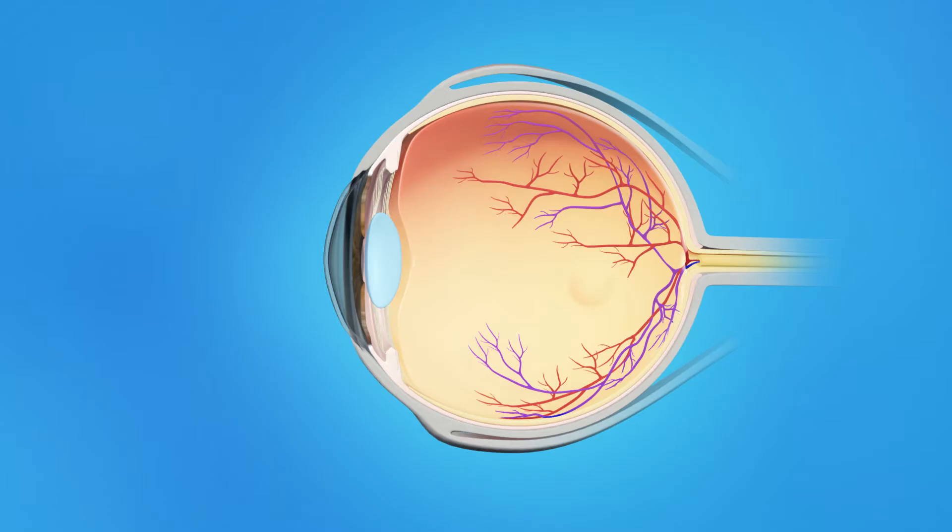The inner eye is filled with a clear jelly-like substance called vitreous. As we age, the vitreous becomes less like jelly and more like liquid. Usually, the vitreous is only loosely attached to the retina, so as the eye moves, the vitreous moves away from the macula without causing problems.